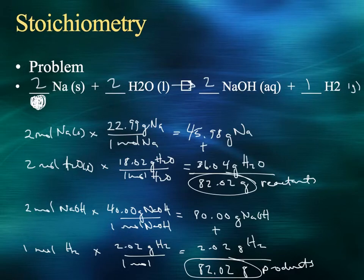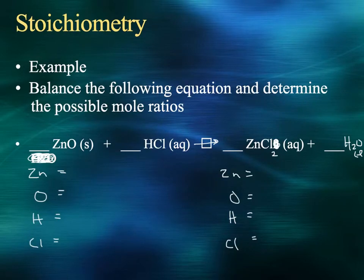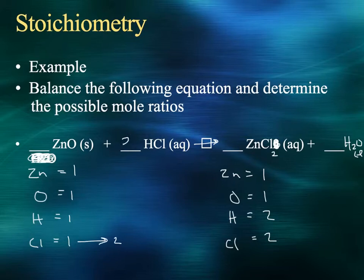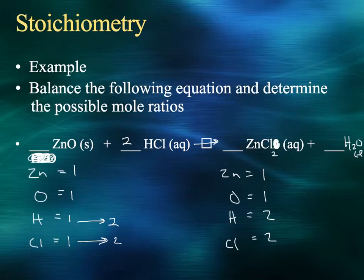Similar problem here: balance the equation and determine the possible mole ratios. We've got zinc oxide reacting with HCl. Counting atoms: one zinc, one oxygen, one hydrogen, one chlorine on the left; one zinc, one oxygen, two hydrogens, two chlorines on the right. Zinc is balanced, chlorine is not. We put a 2 in front of the HCl, which also balances the hydrogens. That gives us equivalent numbers of atoms of each element — the equation is balanced.